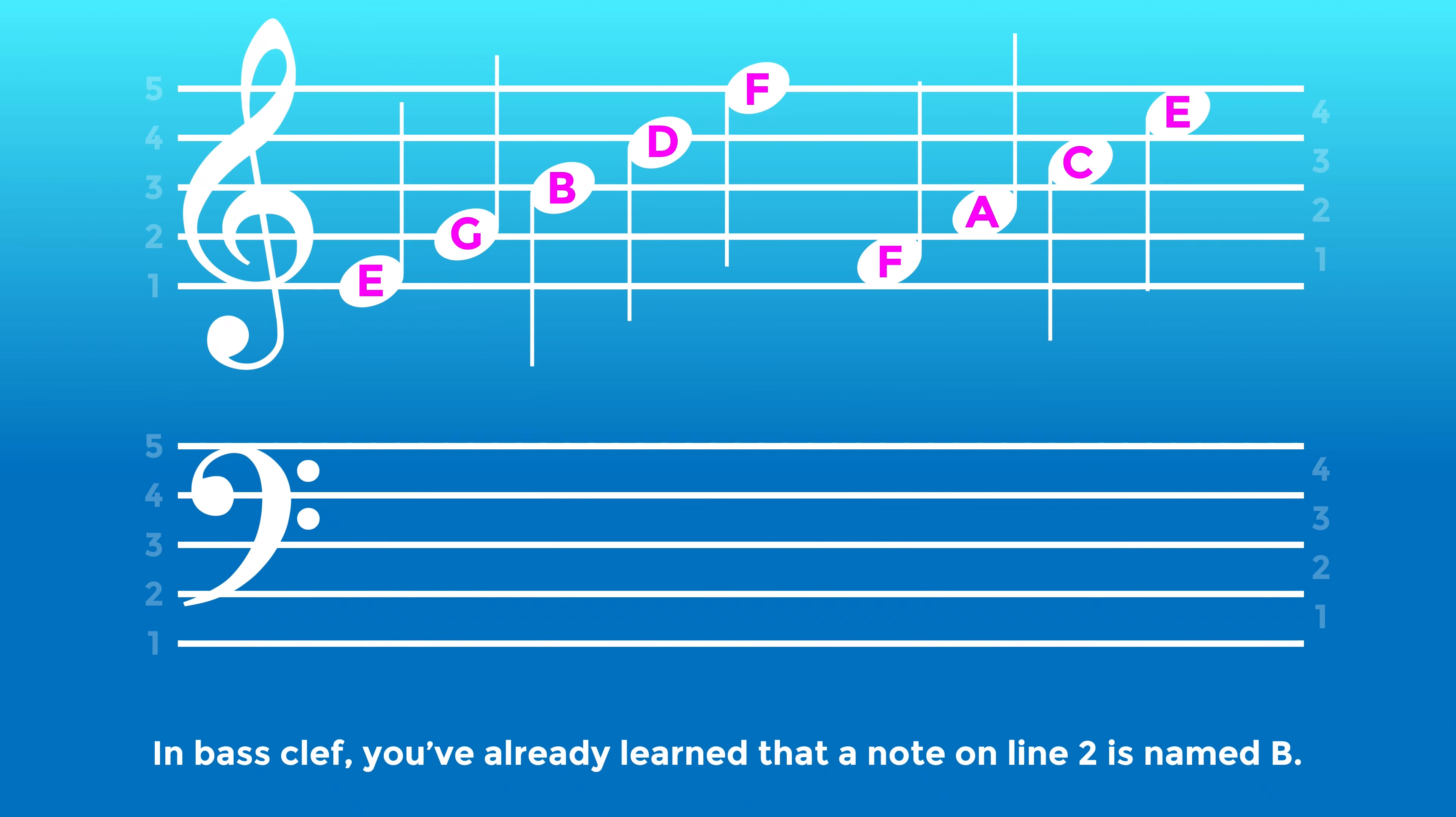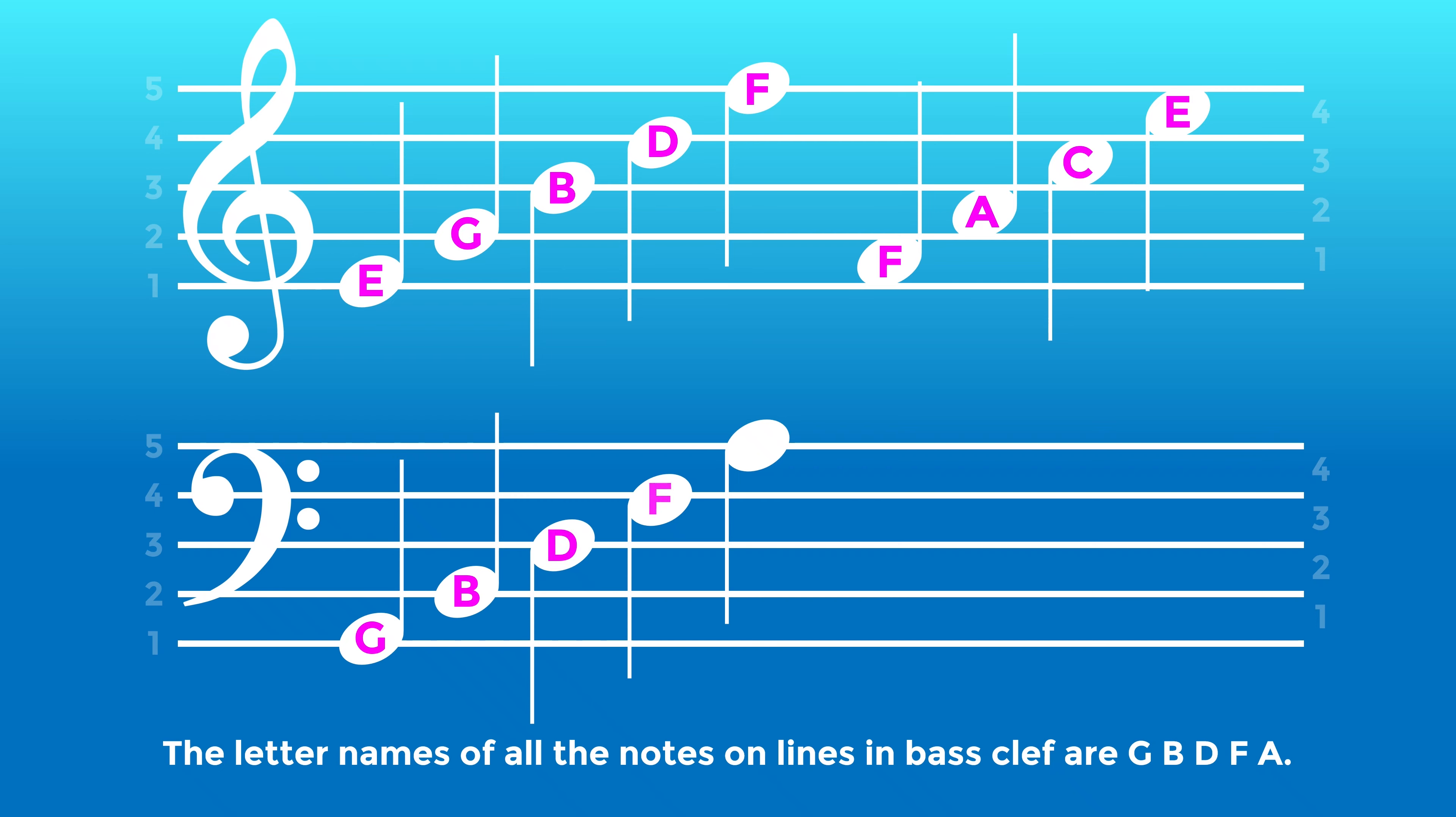In bass clef, you've already learned that a note on line 2 is named B. The letter names of all the notes on lines in bass clef are G, B, D, F, A.